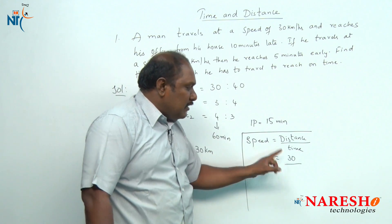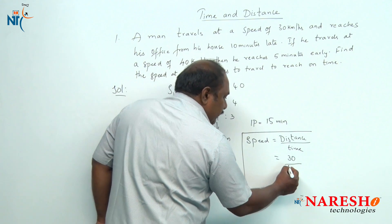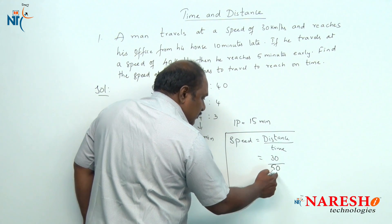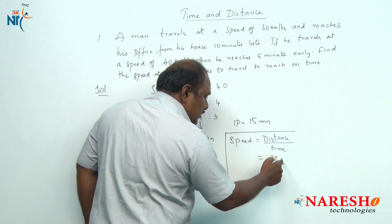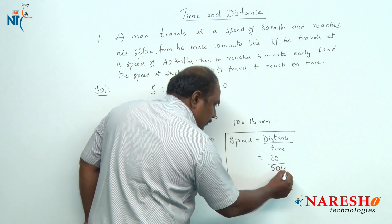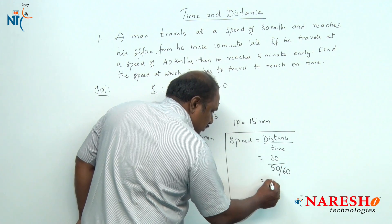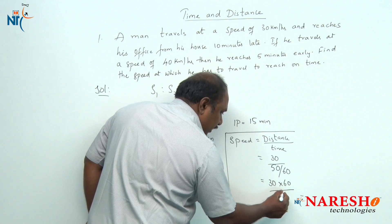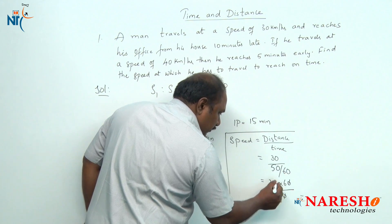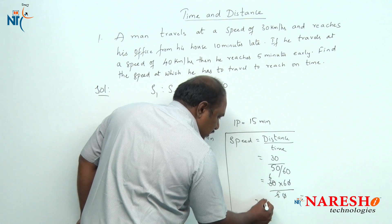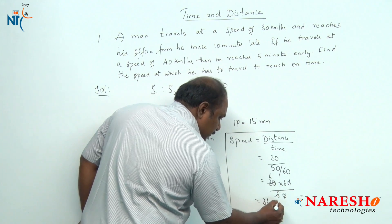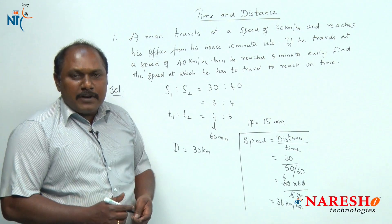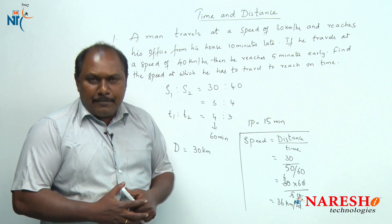He has to travel 30 kilometers in 50 minutes. At what speed should he travel? Converting minutes into hours: speed = 30 ÷ (50/60) = 30 × 60/50 = 36 kilometers per hour. So he has to travel at a speed of 36 kilometers per hour so that he will reach his office on time.